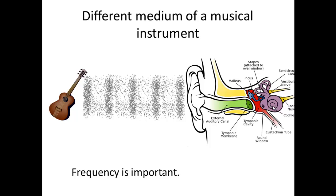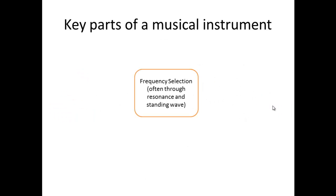That's why there's usually some kind of frequency selection mechanism, i.e. resonance, that happens in our musical instrument, and that's usually done through creating standing waves. And so, that's kind of the central part of most musical instruments, is this frequency selection where we can select certain frequencies, therefore certain pitches and tones and notes that we play. And that's often done through resonance and standing waves.